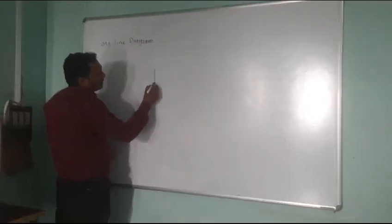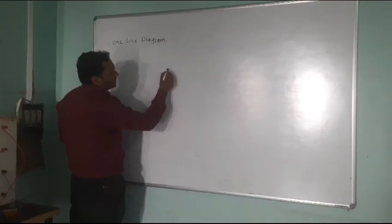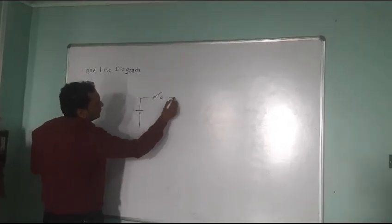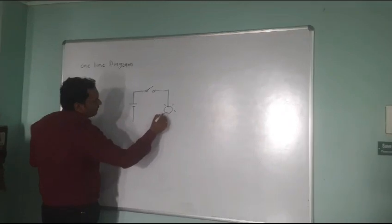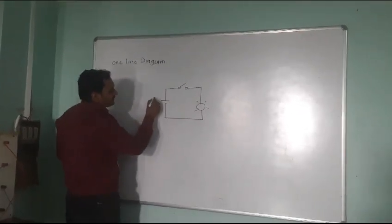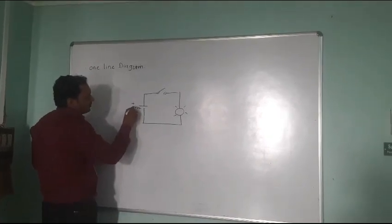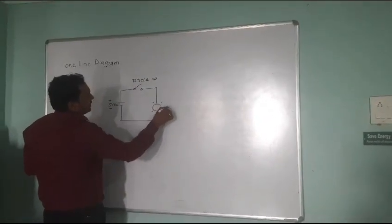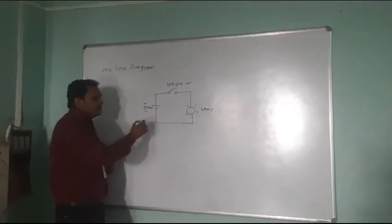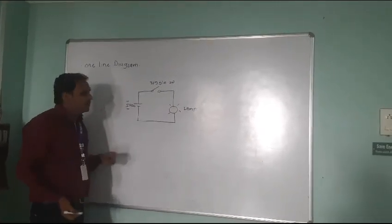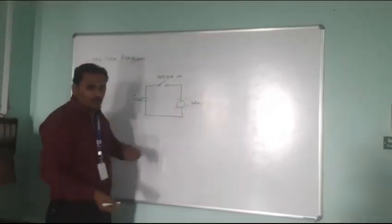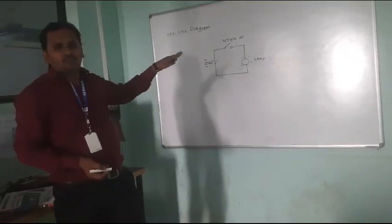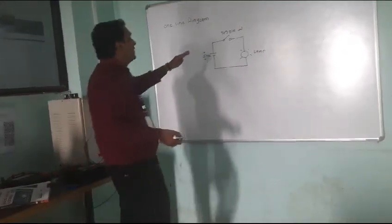A typical circuit using a toggle switch — a typical toggle switch — which is used to execute a task. For example, this is plus 5V DC. This is your toggle switch, and this is your lamp. Now you have to turn on this lamp by using this toggle switch, after passing this 5V DC supply to the lamp. The lamp is a DC lamp which runs on 5 volt DC. This is a general circuit for basic circuit development to get an understanding of one line diagram.